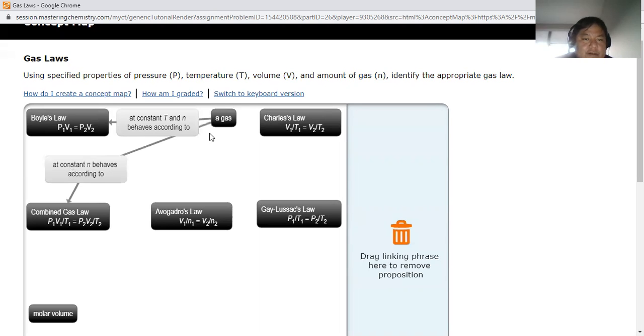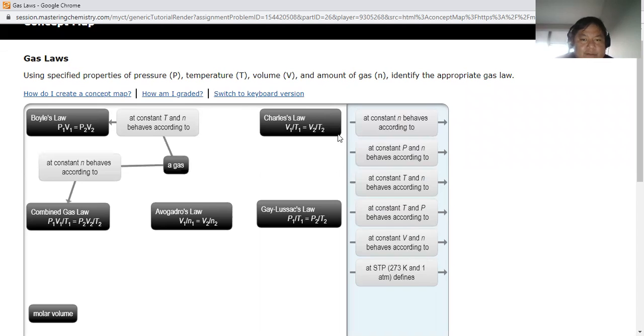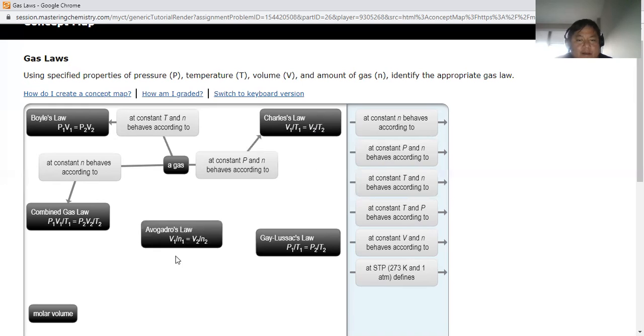Then if you look at Charles Law, Charles Law is volume and temperature, which means pressure and moles - so P and n. So we're going to put that there. You're going to go here, and you're going to go there. I'm going to move these down.